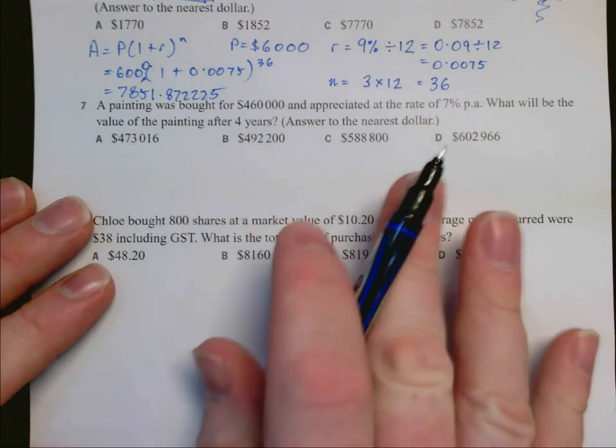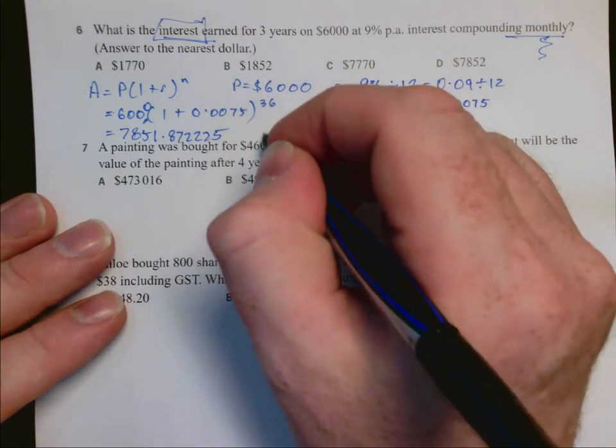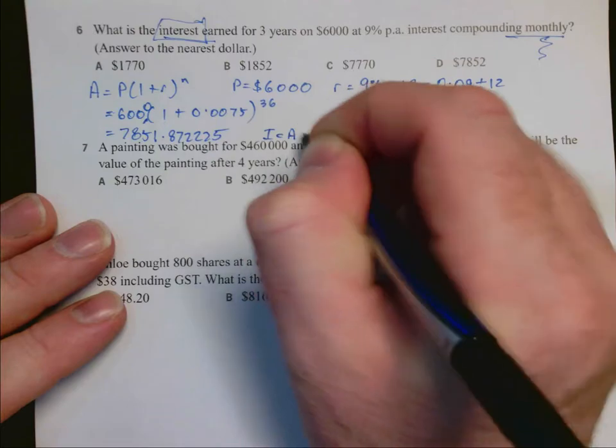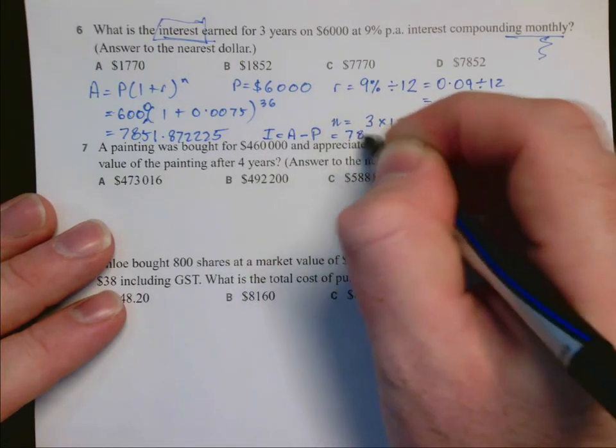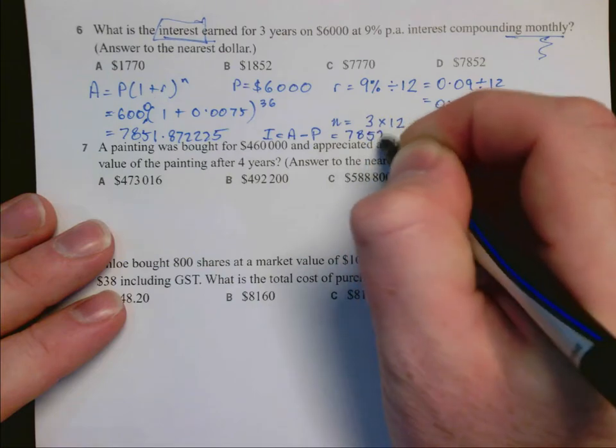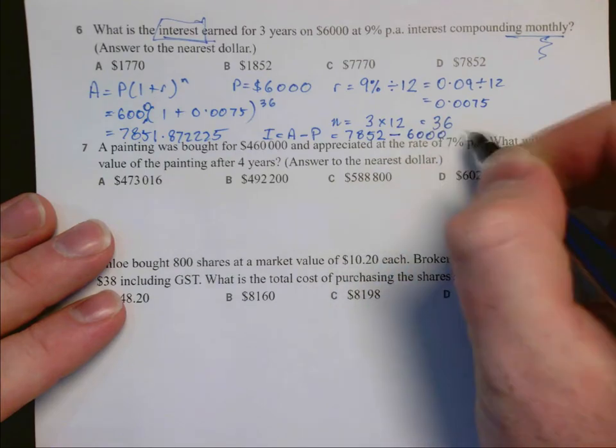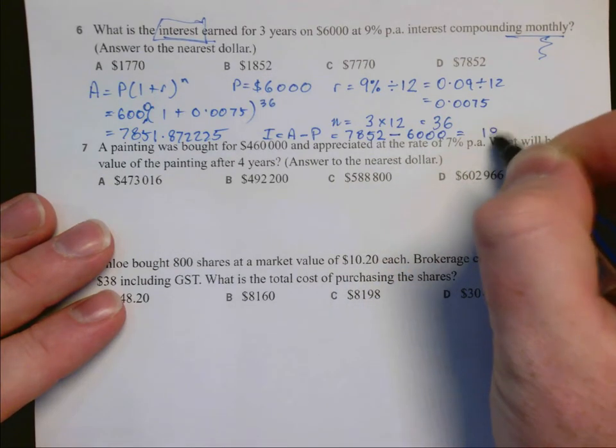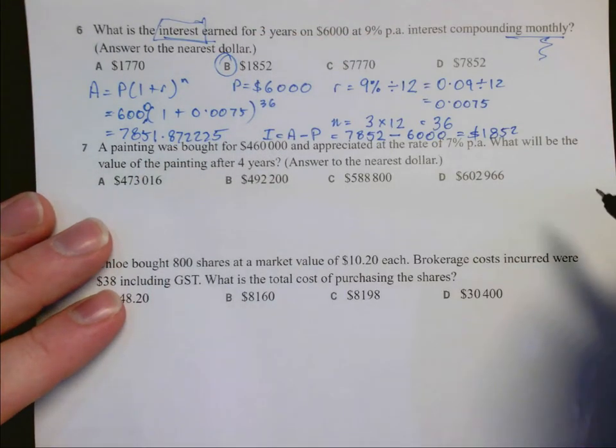If we round to the nearest dollar, however, that would be incorrect because the question asks us for the interest. So the interest is the amount minus the principal. The amount we just calculated, 7,852 rounded to the nearest dollar, subtract the $6,000 principal, and we get 1,852, which is answer B and the correct answer.